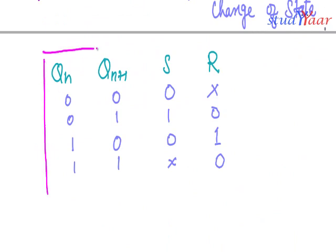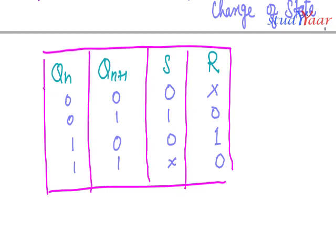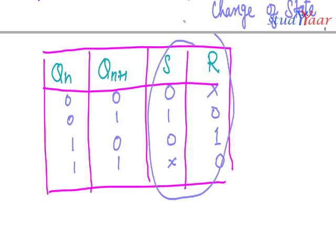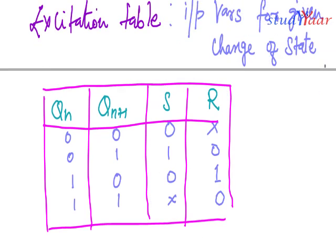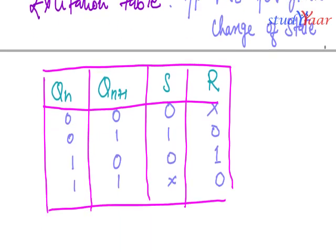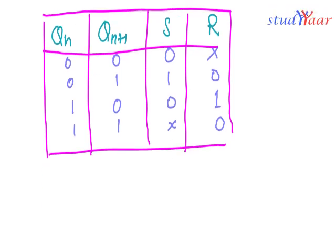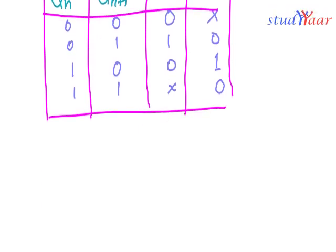I am going to put this in a table. This is your excitation table — it tells you what inputs or excitation you should have to get these transitions. Input variables for a given change of state is known as the excitation table.